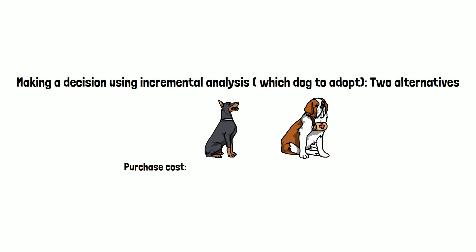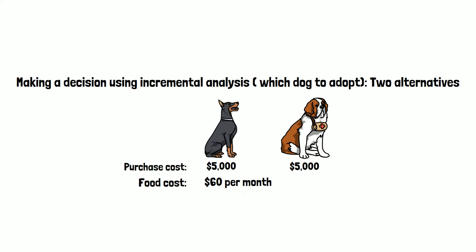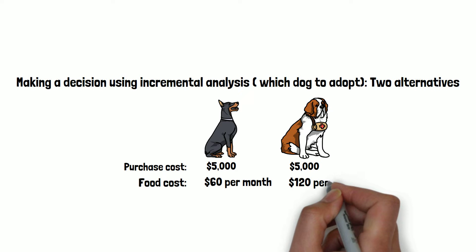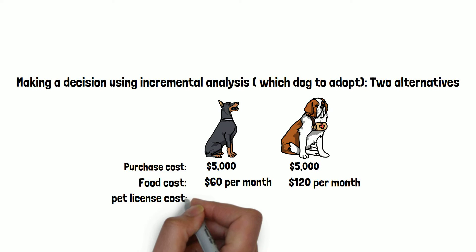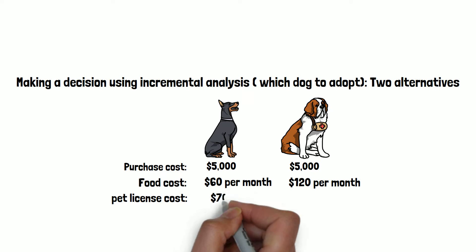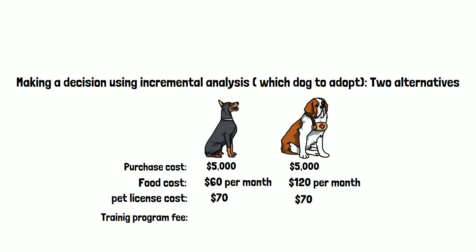When we compare the two dogs, the purchase cost is the same — it costs $5,000 to adopt either one. The food cost: Skinny eats less, costing only $60 per month, but Clumsy eats more food at $120 per month. The licensing fee is the same, $70 for both. We are also going to send the dog to a training program: $1,000 for Skinny and $500 for Clumsy.